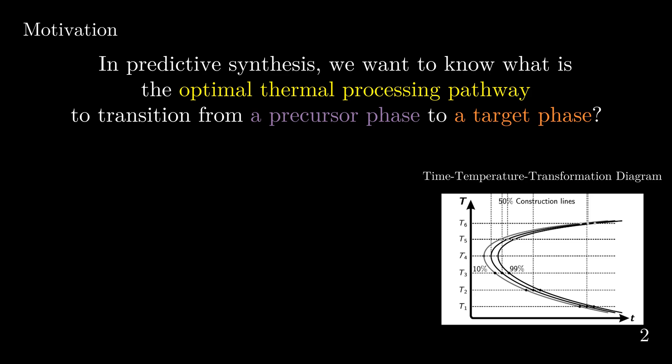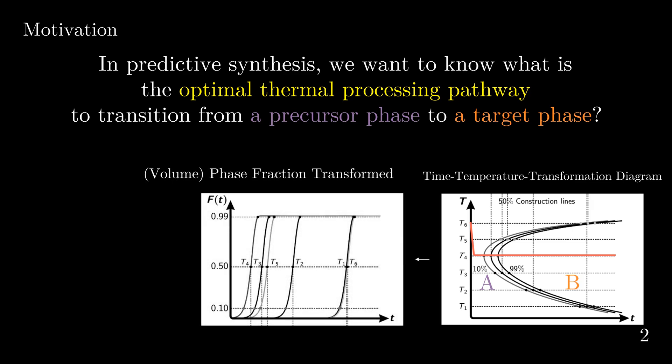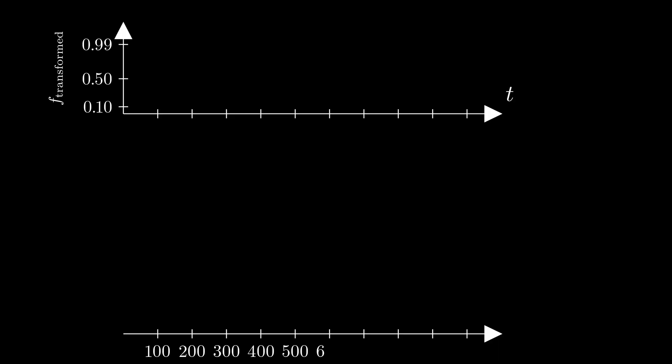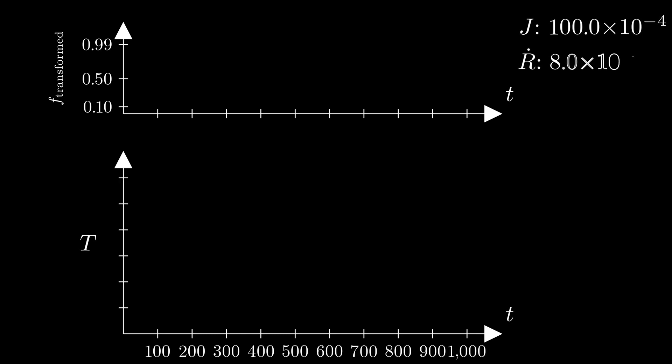Looking at the TTT diagram, we're essentially plotting temperature on the y-axis and time on the x-axis. Let's label the precursor phase on the left as phase A and the target phase on the right as phase B. The optimal processing pathway means we want phase A to transition into phase B as fast as possible. To do that, we need to start at T6 and very rapidly cool down to T4 and maintain that temperature, so that we can go from phase A to phase B in the shortest time possible. We can actually generate this TTT diagram computationally by plotting the phase fraction transformation curves governed by the JMAC equation at different temperatures.